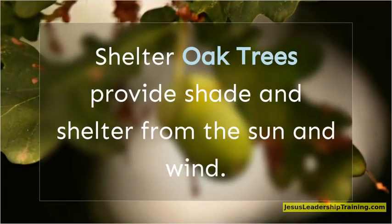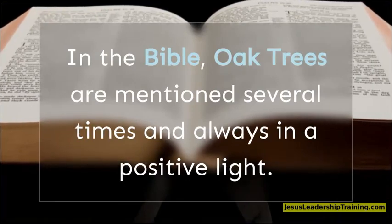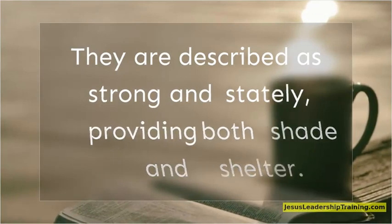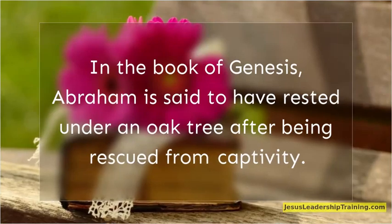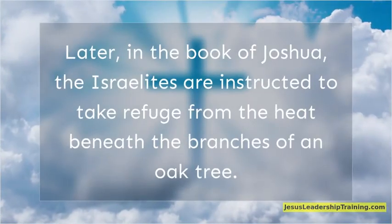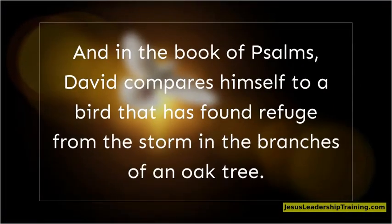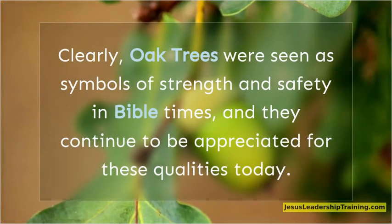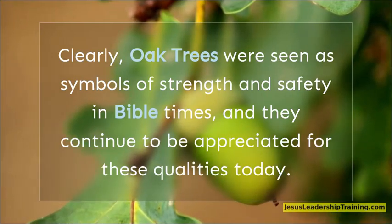Shelter: Oak trees provide shade and shelter from the sun and wind. In the Bible, oak trees are mentioned several times and always in a positive light. They are described as strong and stately, providing both shade and shelter. In the book of Genesis, Abraham is said to have rested under an oak tree after being rescued from captivity. Later, in the book of Joshua, the Israelites are instructed to take refuge from the heat beneath the branches of an oak tree. And in the book of Psalms, David compares himself to a bird that has found refuge from the storm in the branches of an oak tree. Clearly, oak trees were seen as symbols of strength and safety in Bible times, and they continue to be appreciated for these qualities today.